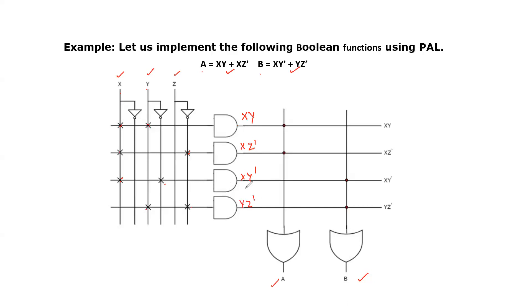Now we should connect these product terms to the OR logic gates based on the requirement only. Here A equals XY plus XZ', so only these two product terms are summed. We link these two product terms to the first OR gate using dot symbols. OR gates follow fixed logic, so we don't use a cross mark symbol — only the dot symbol. Similarly for B, the two product terms are XY' plus YZ', so only at these places we put the dot symbol. The outputs of the PAL are A equals XY plus XZ' and B equals XY' plus YZ'. This is the structure of PAL.